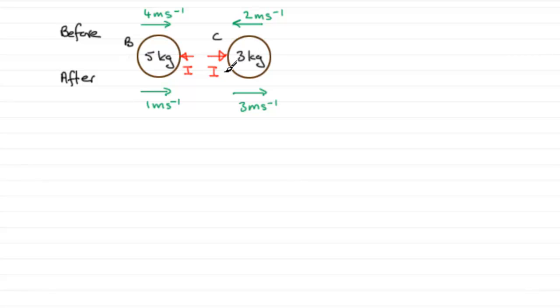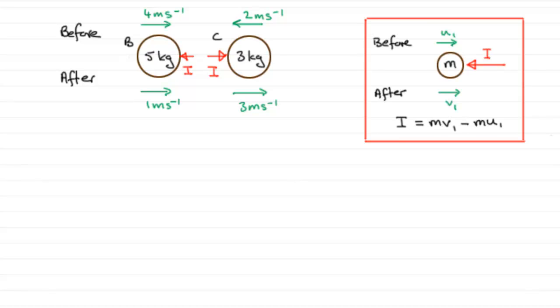Now, how do you work out this impulse on C then? Well, what you've got to do is remember what the formula is for impulse. What I've got here is a quick reminder that if you've got a mass M and it receives an impulse and originally it's moving with a velocity of U1 and after the impulse, after the bang, it moves with a velocity V1. Impulse is defined as the change in momentum. The final momentum minus the initial momentum.